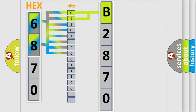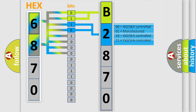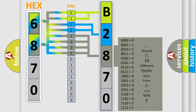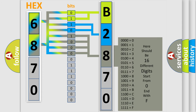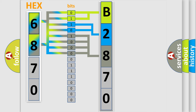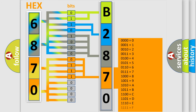The next two bits determine the second character. The last four bits of the first byte define the third character of the code. The second byte is composed of a combination of eight bits: the first four bits determine the fourth character of the code, and the combination of the last four bits defines the fifth character.